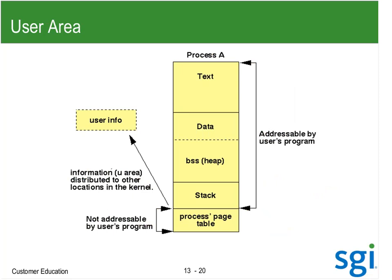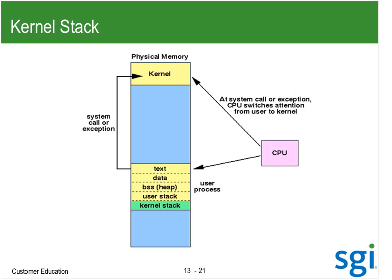There is a portion of the process in kernel space — the user area — not addressable by the user program. The kernel stack trace can be viewed with CRASH, KDB with arch-kdb, BT, echoing a 'T' into /proc/sysrq-trigger, perf record -G, or a butterfly call stack report — these all look at the kernel stack information.